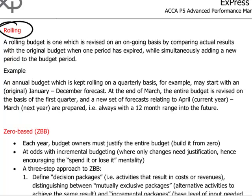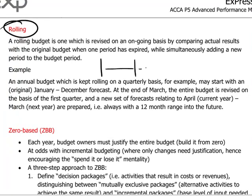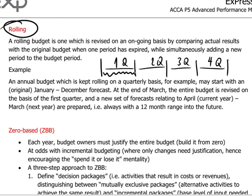A rolling budget works as follows: when we pass or complete one period along the way — let's say we do an annual budget with four quarters — at the end of the first quarter, we adjust our budget going forward based on the actual results of the first quarter. In a sense, this is like recalibrating your budget so that for the remaining quarters of the year, you have an adjusted budget which already takes into account the realities of the first quarter.